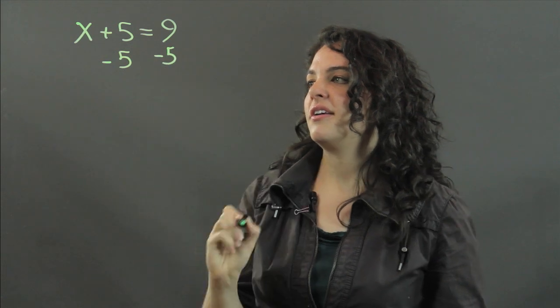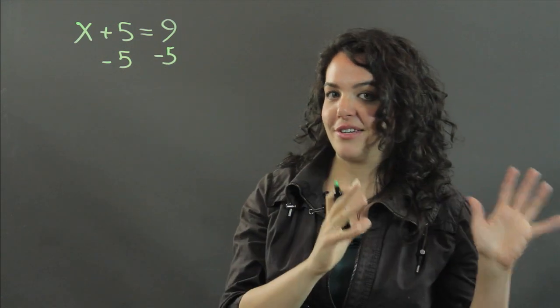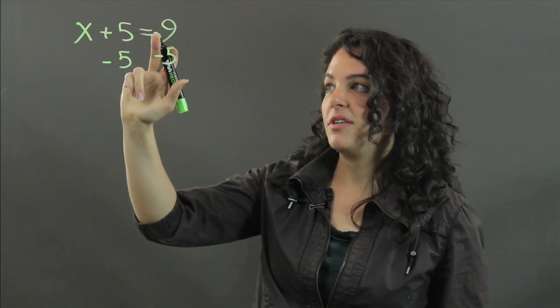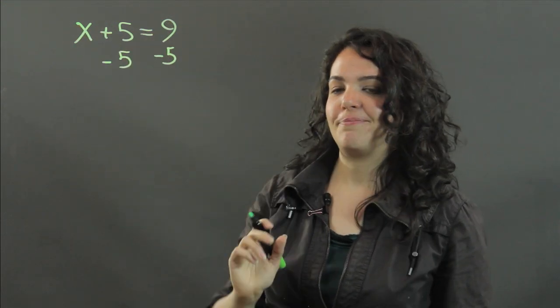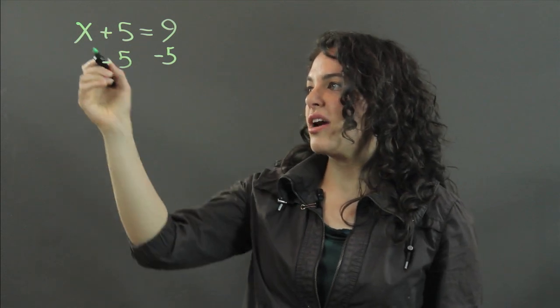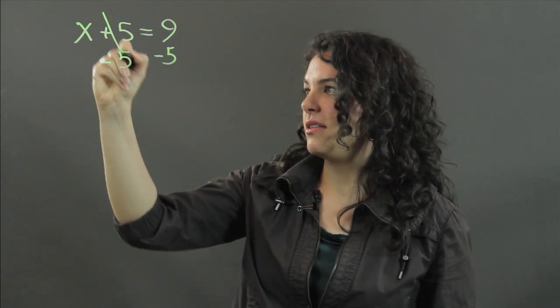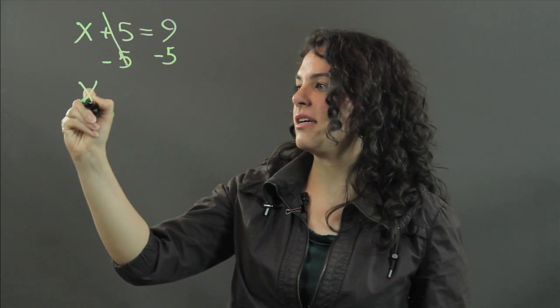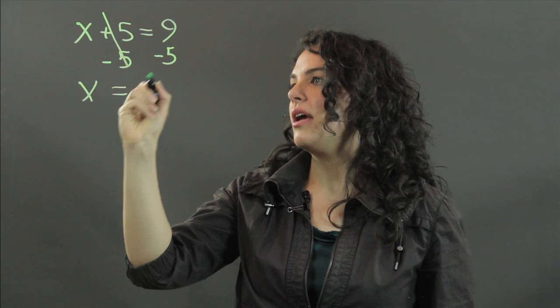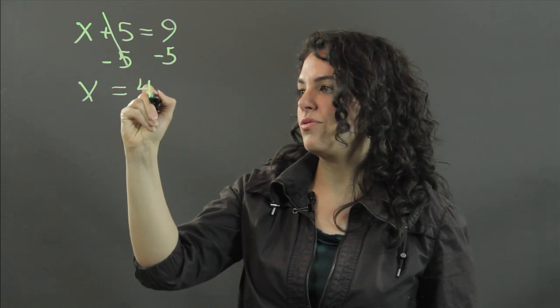Whatever you do to one side, thou shalt do to the other side in order to preserve the equality of each side. So when we subtract 5 from this side, these cancel out and we just get x. And 9 minus 5 is 4.